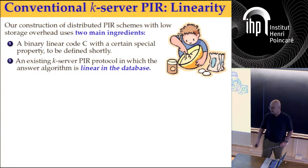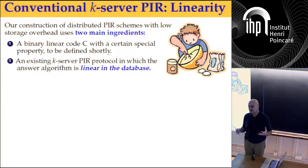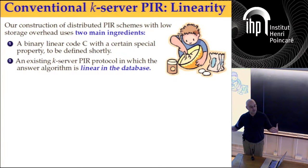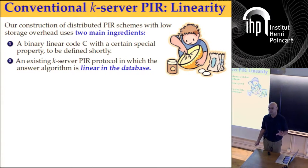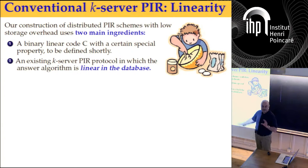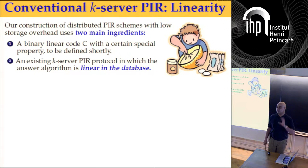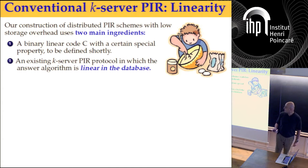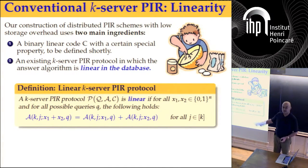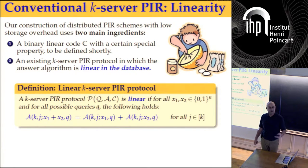I need one more definition. Our scheme will construct a coding scheme that sits on top of a PIR protocol, and that coding scheme requires two things: first, a binary linear code; and second, an existing PIR protocol — I'm not going to invent new ones. But it needs to be linear.